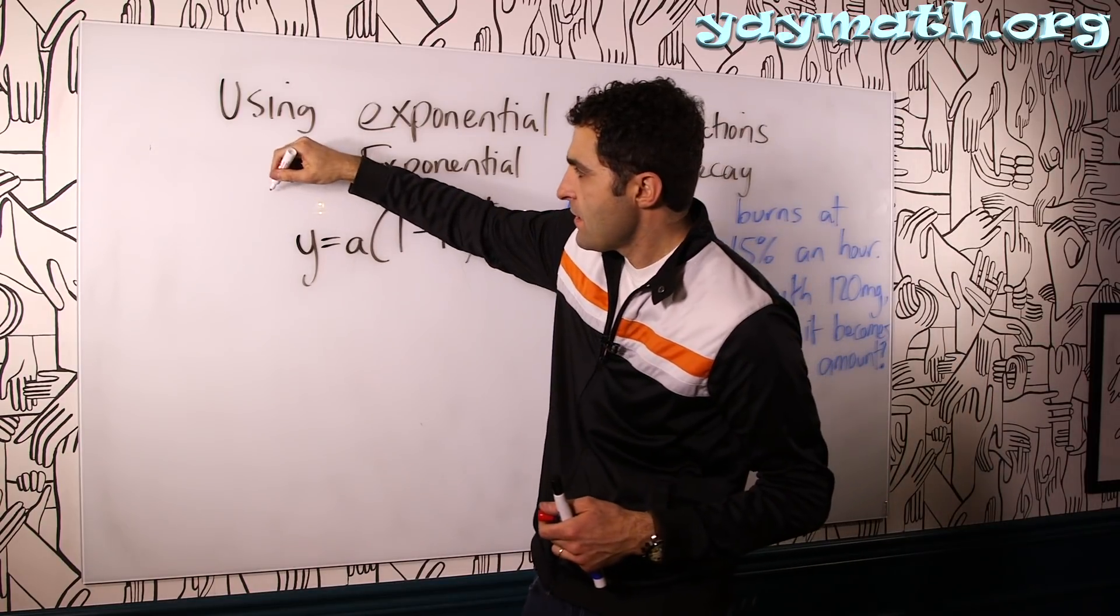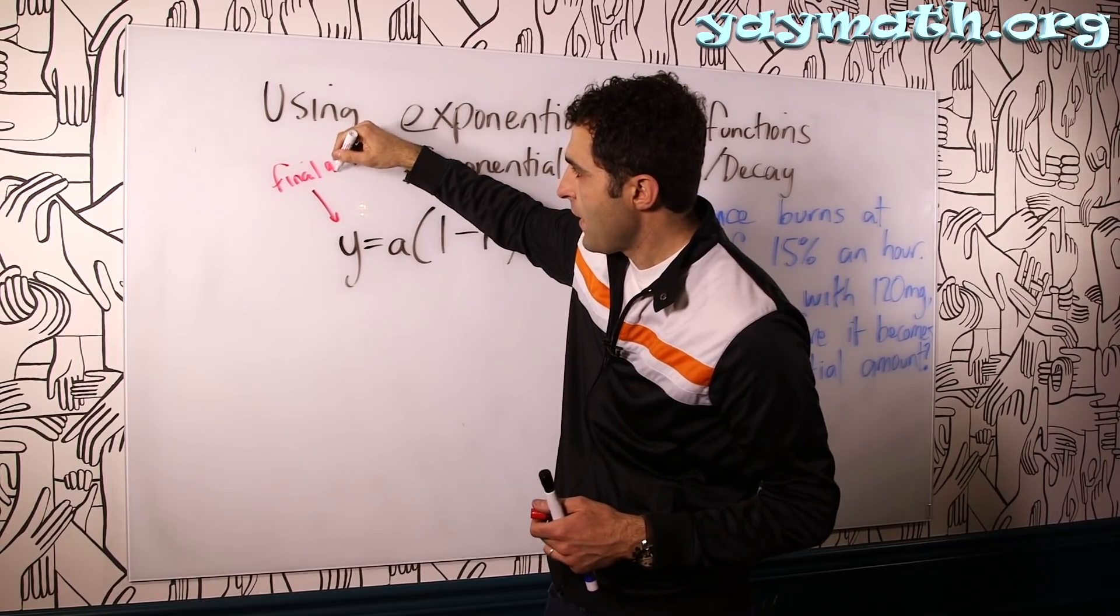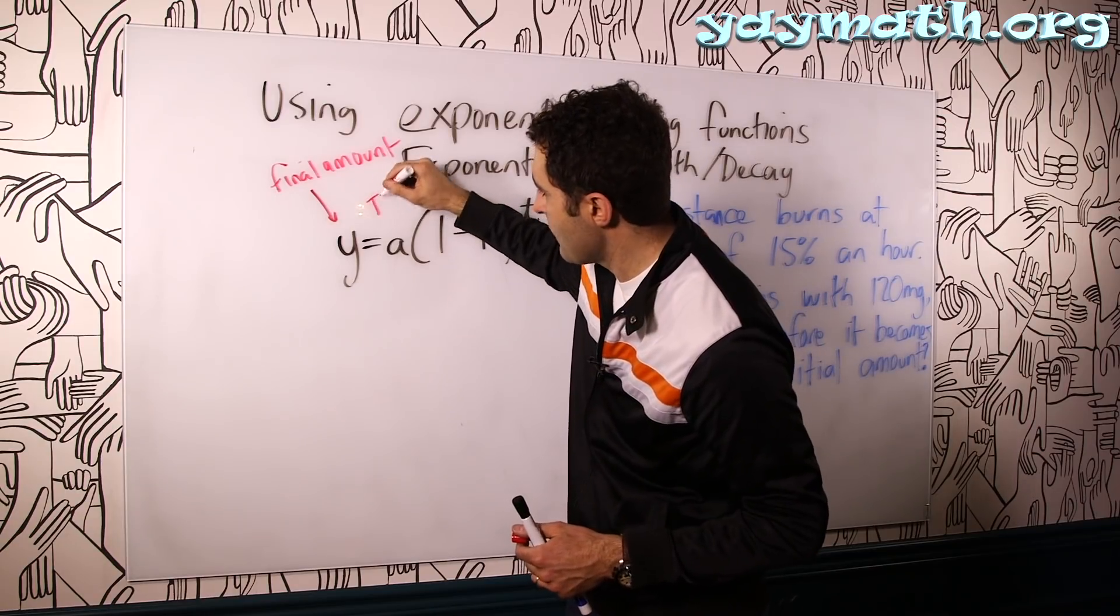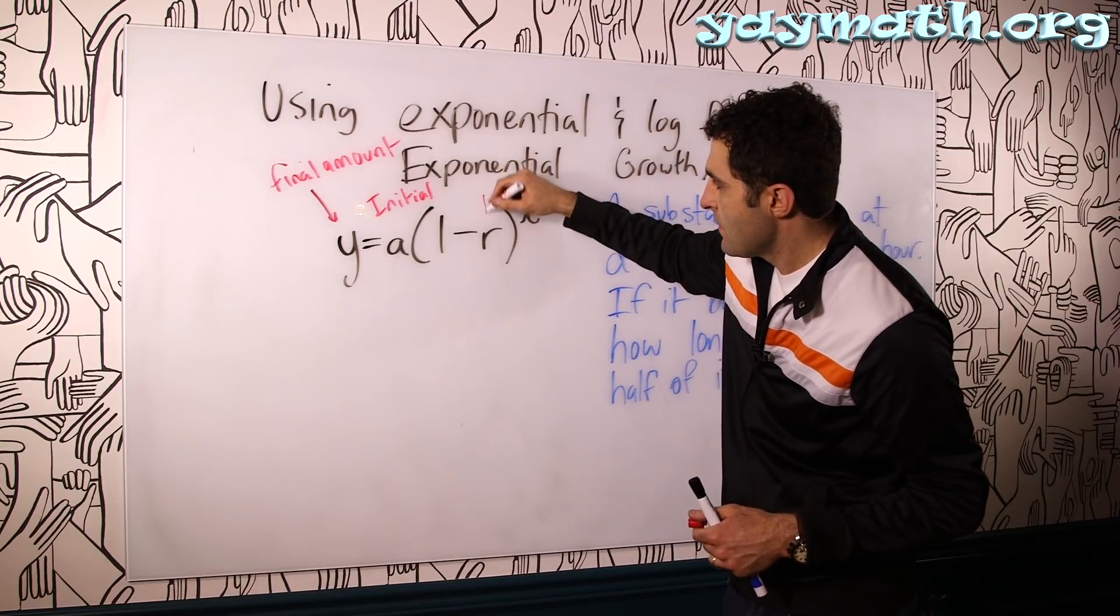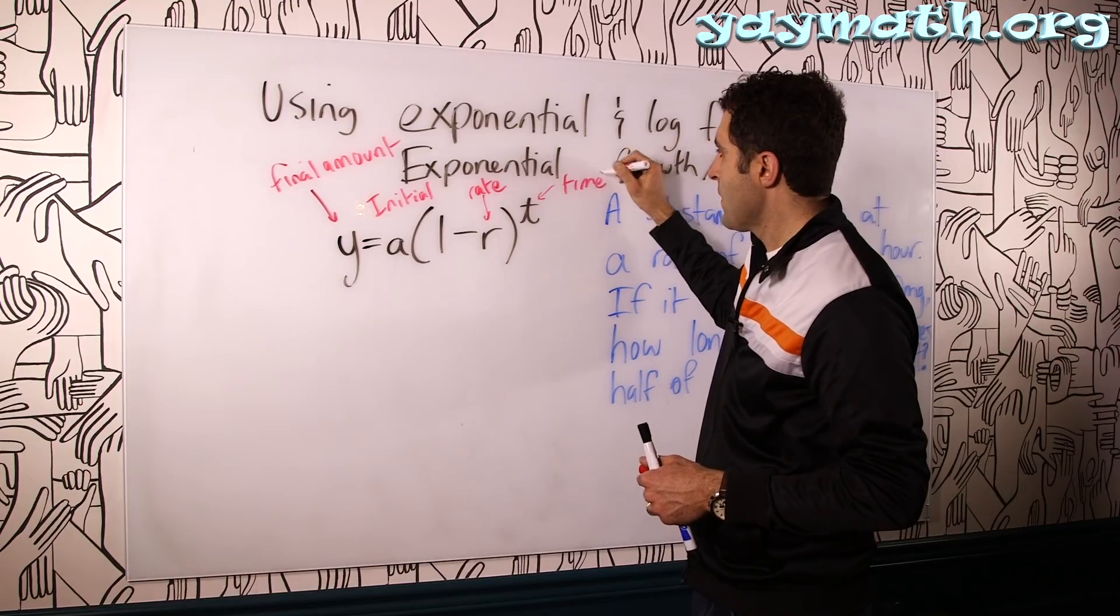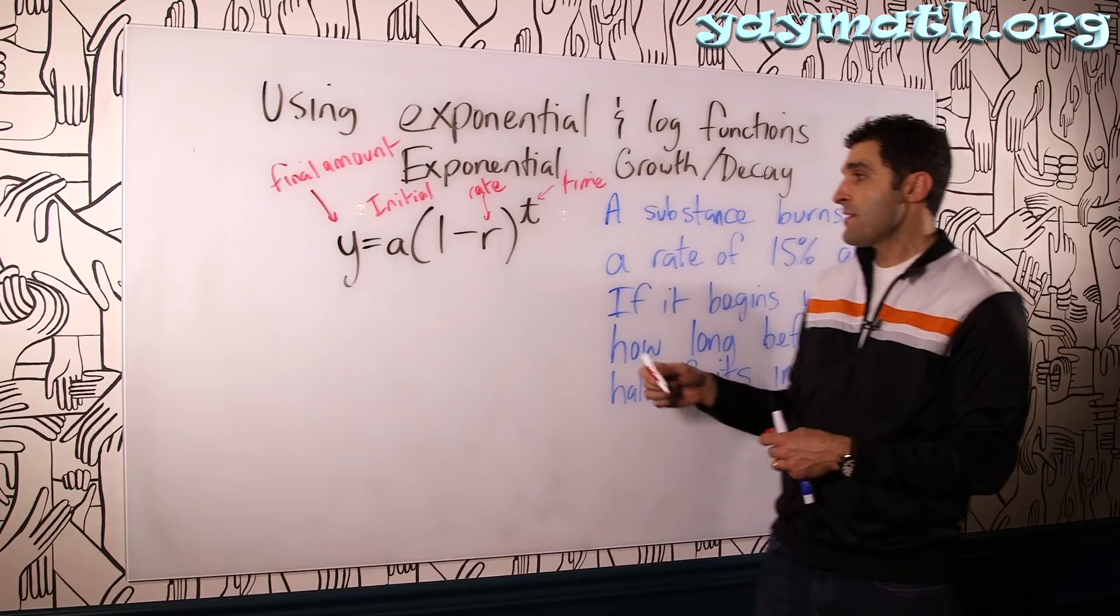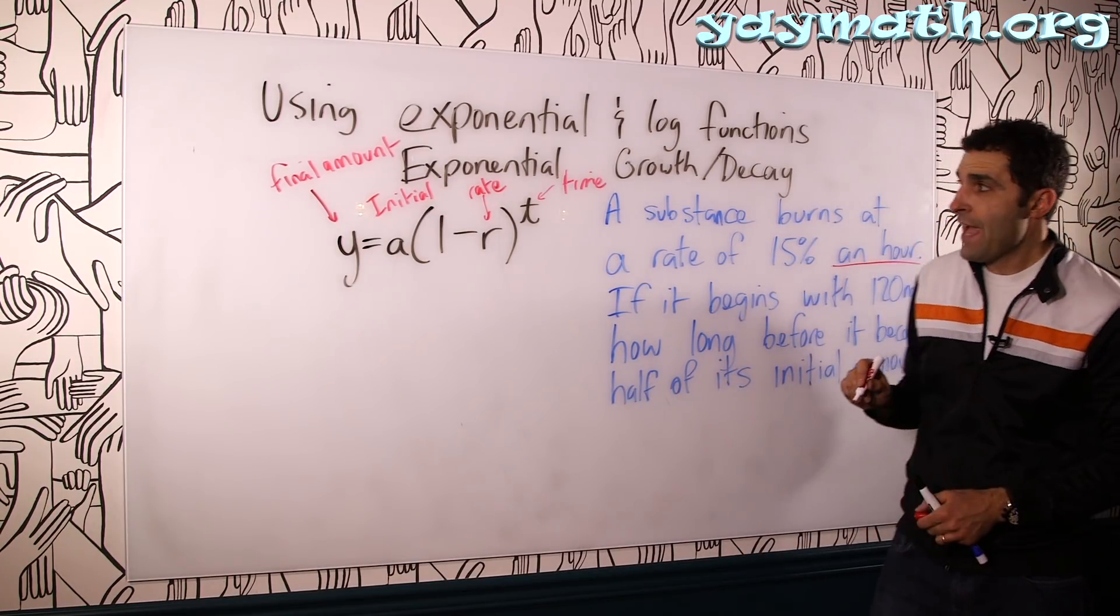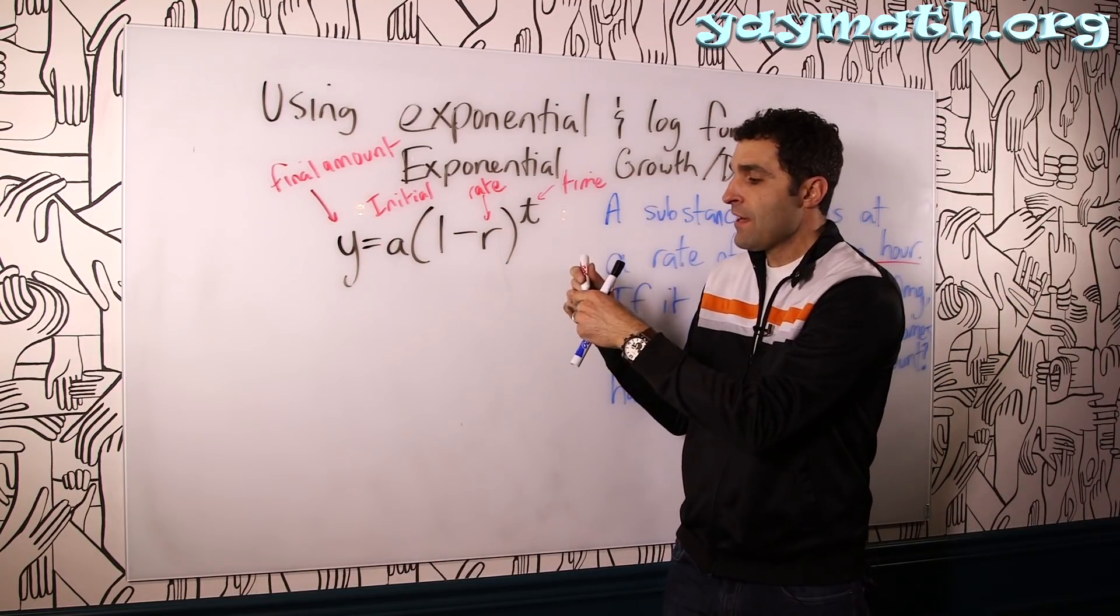This Y is the final amount. That's the one we're solving for, the final amount. This A, this is the initial amount. Rate is R here and this is increments of time and that time can be based on the problem specifically. Sometimes years. In this case, it looks like the increments of time is every hour. So we plug in everything that we need or everything we know into the formula and calculate what we need.